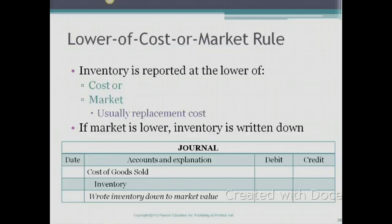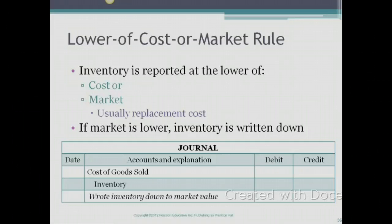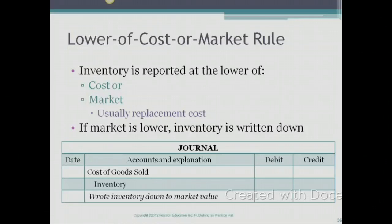Inventory on the balance sheet is reported at the Lower of Cost or Market. Market usually means replacement cost of the inventory. If the market price of the inventory you hold is lower, we write down our inventory and report it at the market value. Market means replacement cost. We write it off to Cost of Goods Sold by debiting Cost of Goods Sold and crediting inventory.